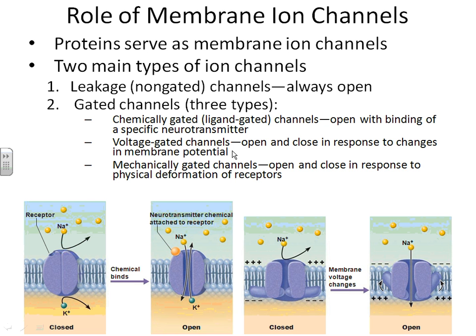Voltage-gated channels are the type of channels that open or close in response to changes in membrane potential. The voltage-gated channels open and close depending on the charged state of the membrane. Normally the inside of a cell is more negatively charged. Whenever something causes those charges to switch — making the inside more positive — that can serve as a stimulus for these channels to open. We saw these types of channels during the propagation of depolarization down the muscle cell.